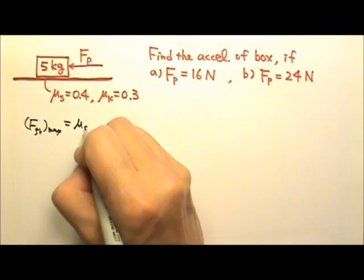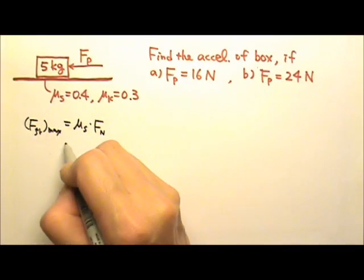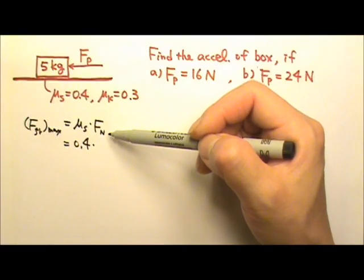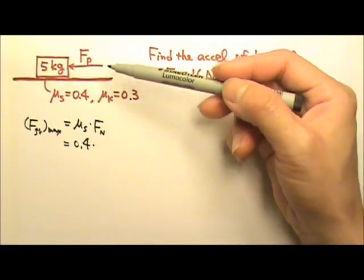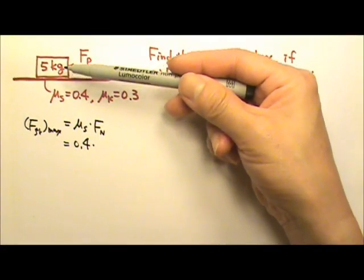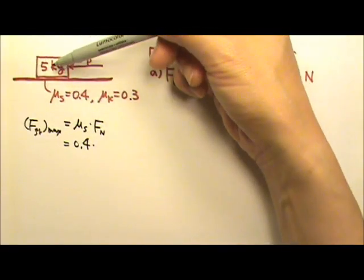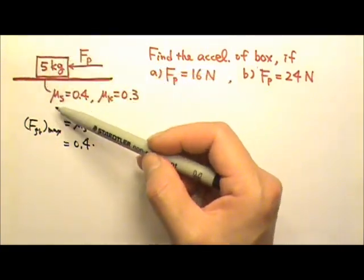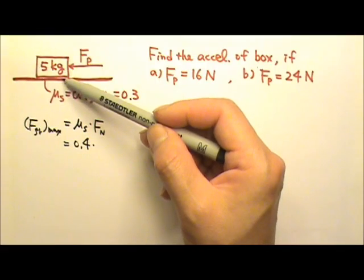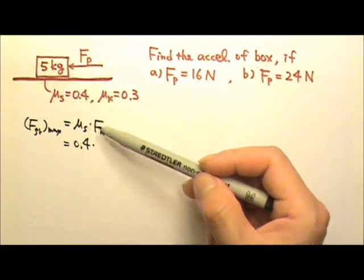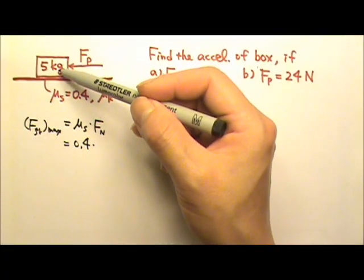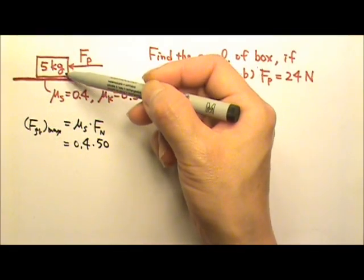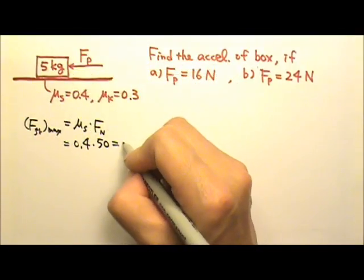The equation is μs times the normal force. μs is 0.4 times the normal force. Now, we can draw the force diagram to figure out the normal force. Or in this case situation, we can see that the pushing force is horizontal. There is no slanted force. There are no forces pulling the box up or pushing it down. So nothing is complicating the forces in the vertical direction. The table only experiences the weight of the box, which is 50 newtons. So the normal force between the box and the table would be 50 newtons. The table experiences the normal weight of the box. So this will give us a maximum friction of 20 newtons.